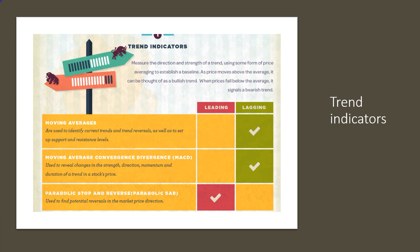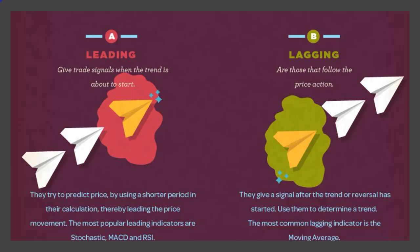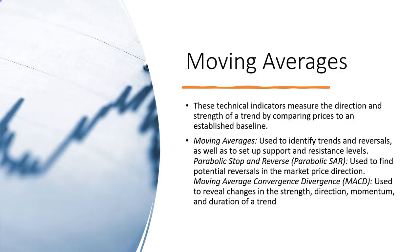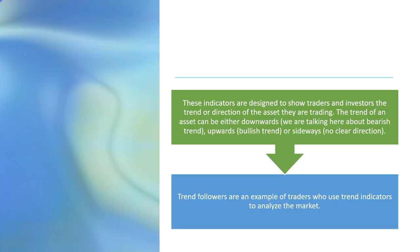Even though moving averages lag price, we've developed exponential moving averages, weighted moving averages, and displaced moving averages to reduce that lag. Displaced moving averages actually move the indicator toward a leading indicator. Remember: leading indicators give trade signals when the trend is about to start, while lagging indicators follow the price action. Moving averages are used to identify trends and reversals, as well as to set up support and resistance levels.